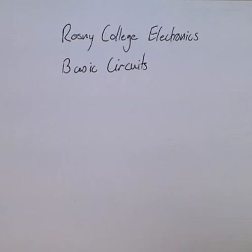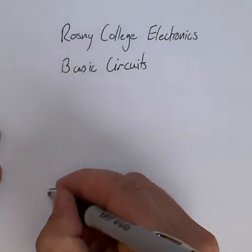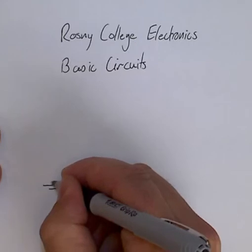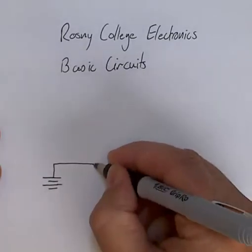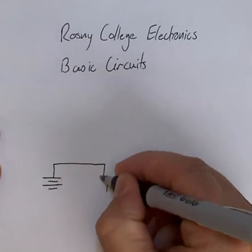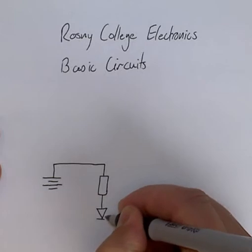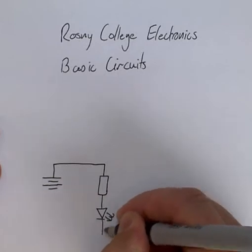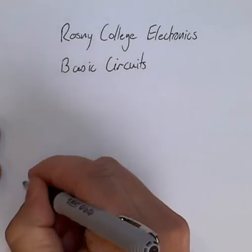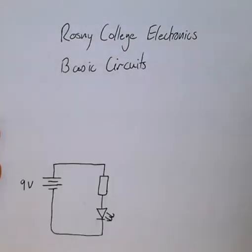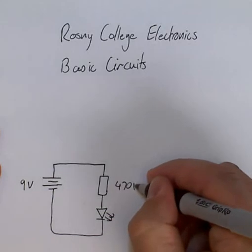Here is a diagram showing a basic circuit. It's going to have a battery and some conductors, resistor, LED, complete circuit. Put some values in: 9V battery and a 470 ohm resistor.